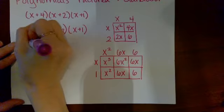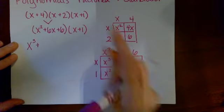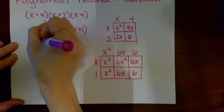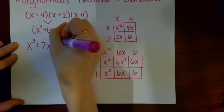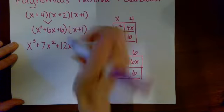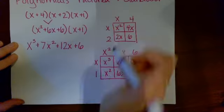So my final solution will be x cubed. That's my first box. 6 x squared plus x squared, which is 7 x squared. 6 x plus 6 x, which is 12 x. And finally, six.